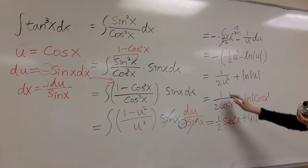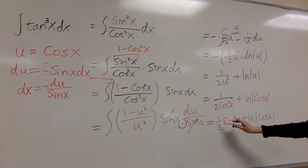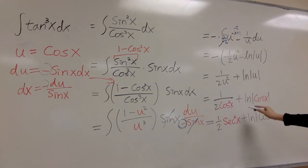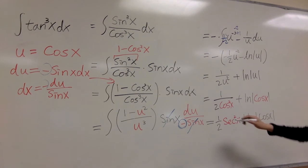And just make it prettier. 1 over cosine x is secant x, so 1 over cosine x squared is secant x squared. So the answer is 1 half secant x squared plus ln cosine x.